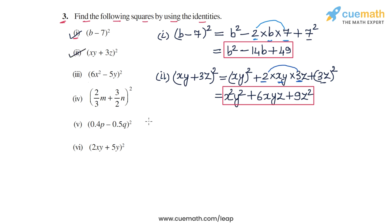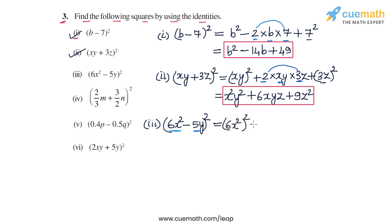Now we come to part 3. In part 3, we have to expand 6x squared minus 5y whole square. This is of the form a minus b whole square, where a is 6x squared and b is 5y. We can expand a minus b whole square as a squared minus 2ab plus b squared. So we write 6x squared whole square minus 2 times 6x squared times 5y, plus 5y whole square.